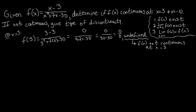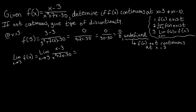By plugging in f(3), we were essentially evaluating the limit as x approaches 3 of f(x) by passing to the limit. We plugged in 3 and received an indeterminate form — zero over zero is indeterminate. When we get this, we can ask ourselves if there's any manipulation we can do to simplify the function. Since we received an indeterminate form, we're going to try factoring. Rewriting f(x) as (x-3) over its factored denominator: the denominator factors into (x-3)(x+10).